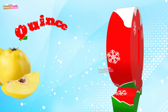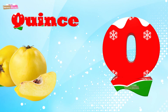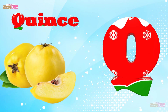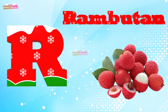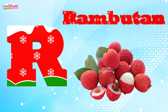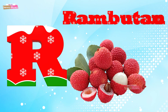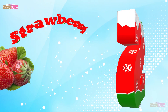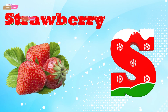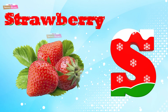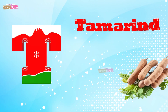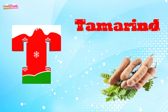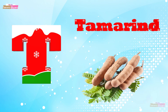Q is for quince, quince. R is for rambutan, rambutan. S is for strawberry, strawberry. T is for tamarind, tamarind.